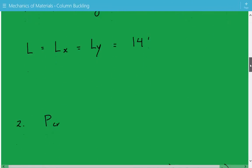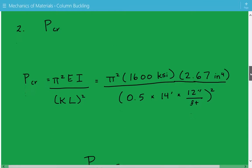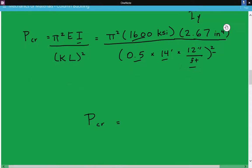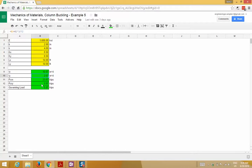Now we can calculate the critical buckling load. It's equal to π² times the modulus of elasticity times the least moment of inertia divided by the effective length squared. Plugging in the numbers: π² times 1600 ksi, least moment of inertia is Iy = 2.67 inches to the fourth power, divided by the effective length squared, which is (0.5 × 14 feet × 12)². So our critical buckling load is 5.97 kips.